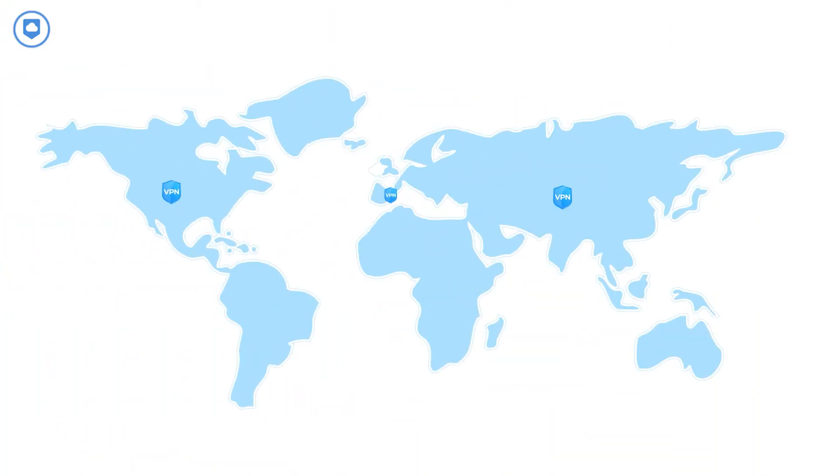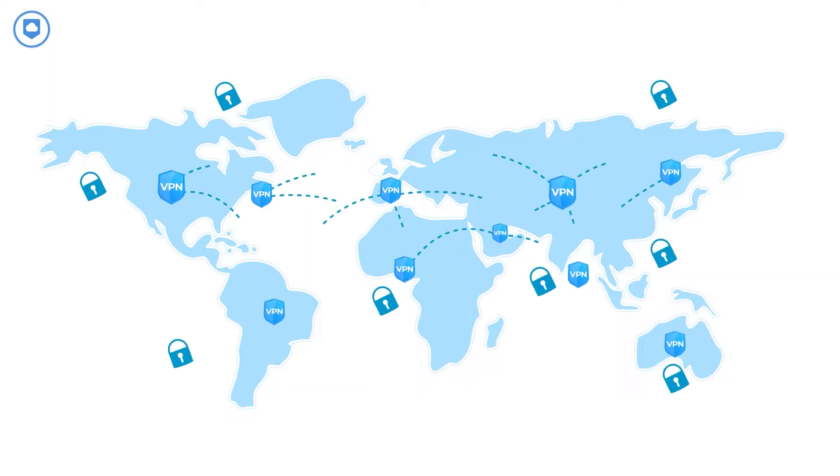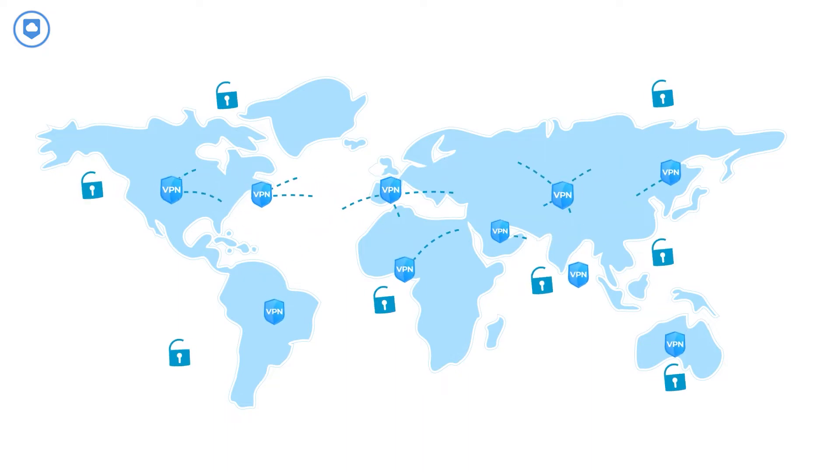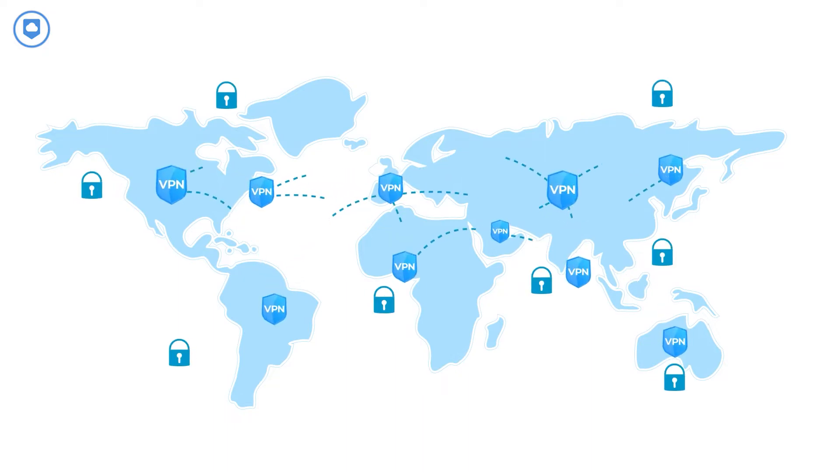Your signal then gets sent to a VPN server where it gets decrypted and your traffic goes to the website you want to access. Before it gets back to you, your traffic gets encrypted by the VPN server and it's only decrypted when it reaches your device. This ensures that no one is ever able to see what websites you're visiting. This also works for things like online games which might be blocked at your school — just connect to your VPN and you'll be able to unblock anything you want.